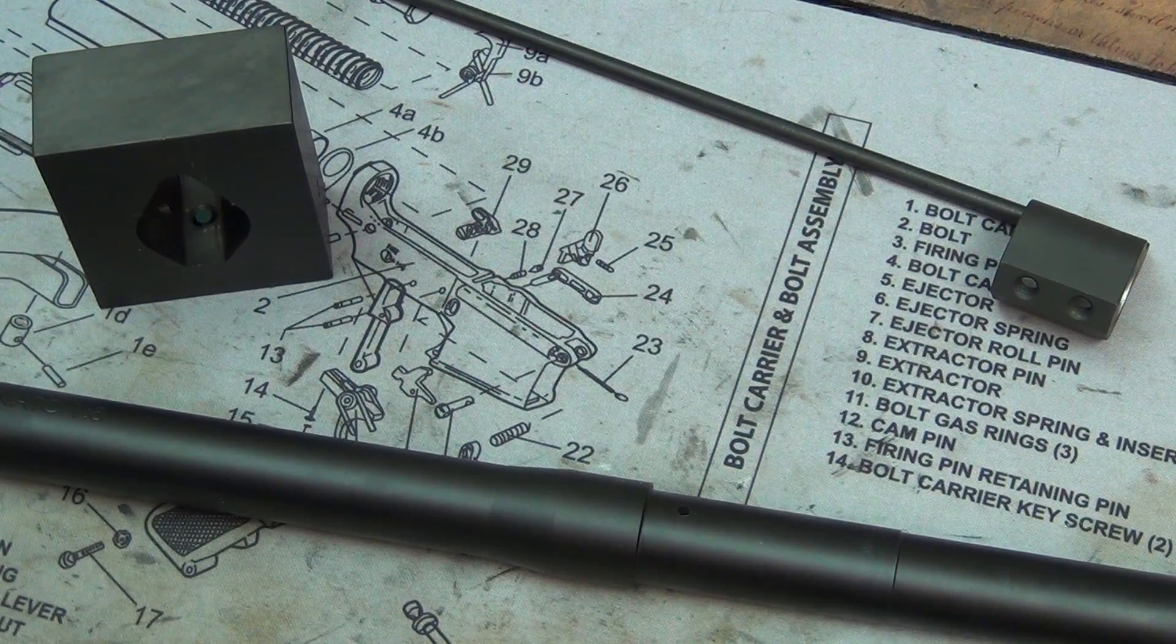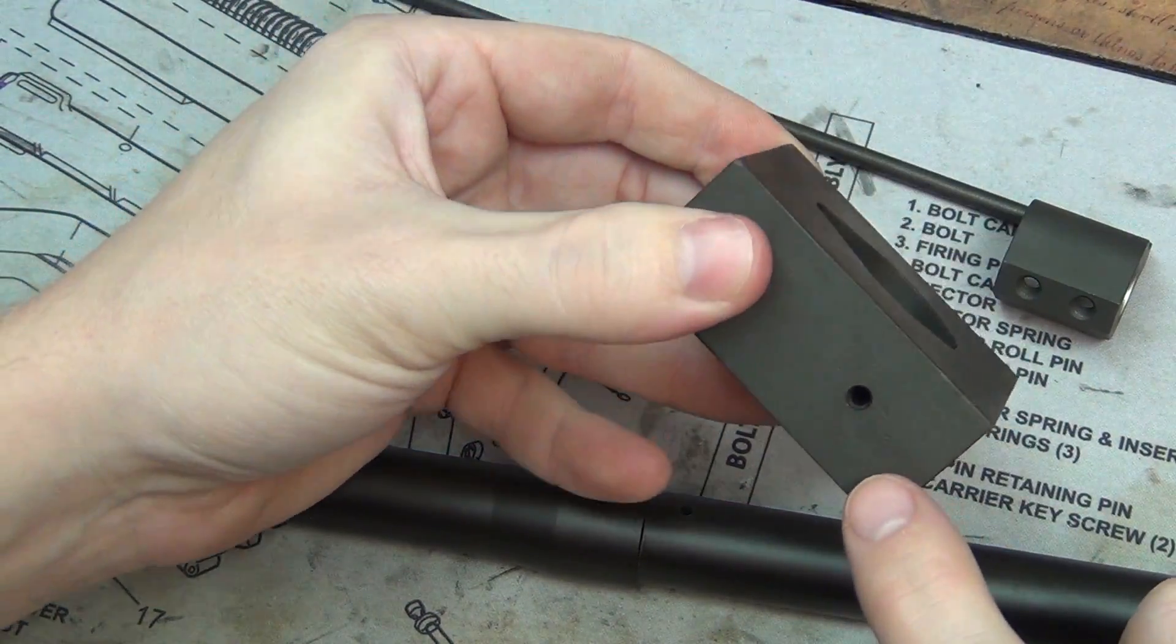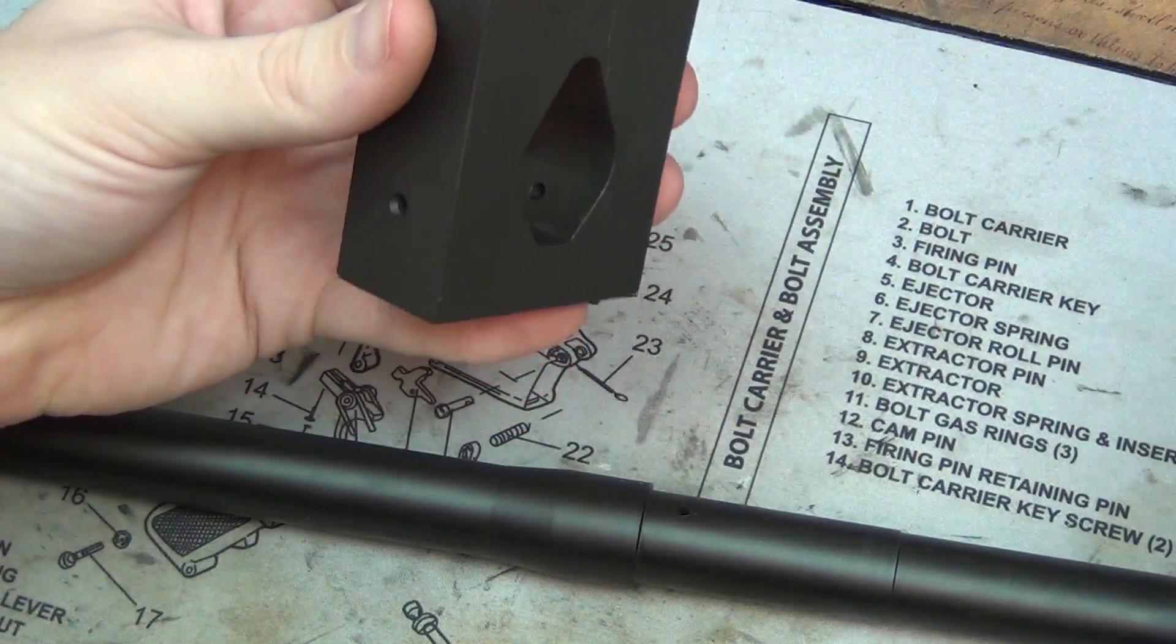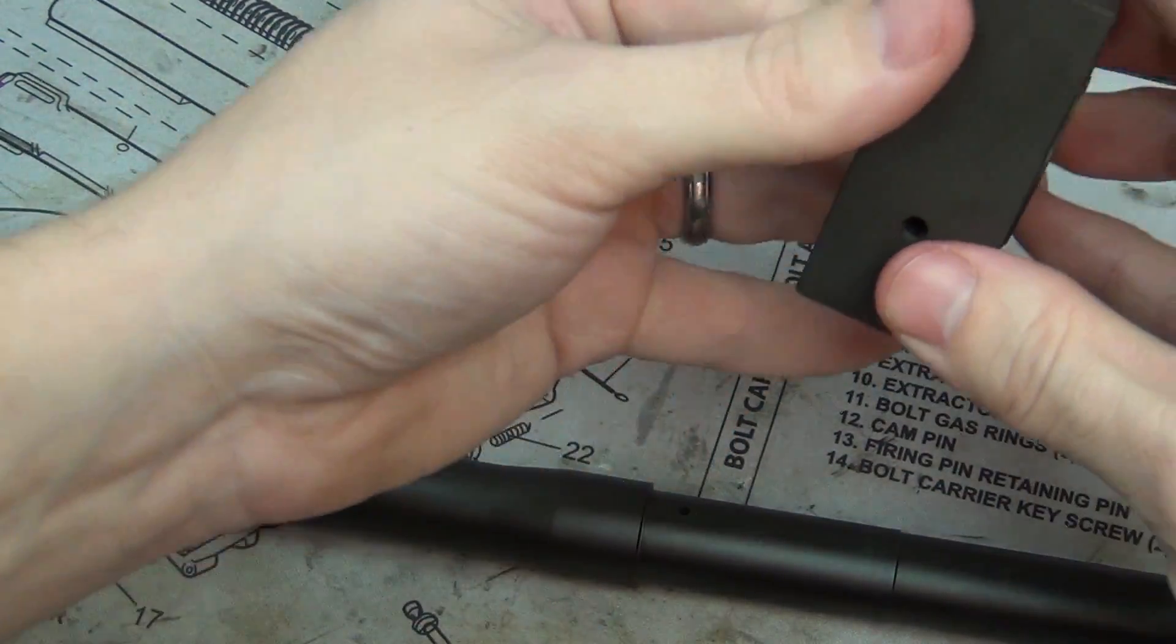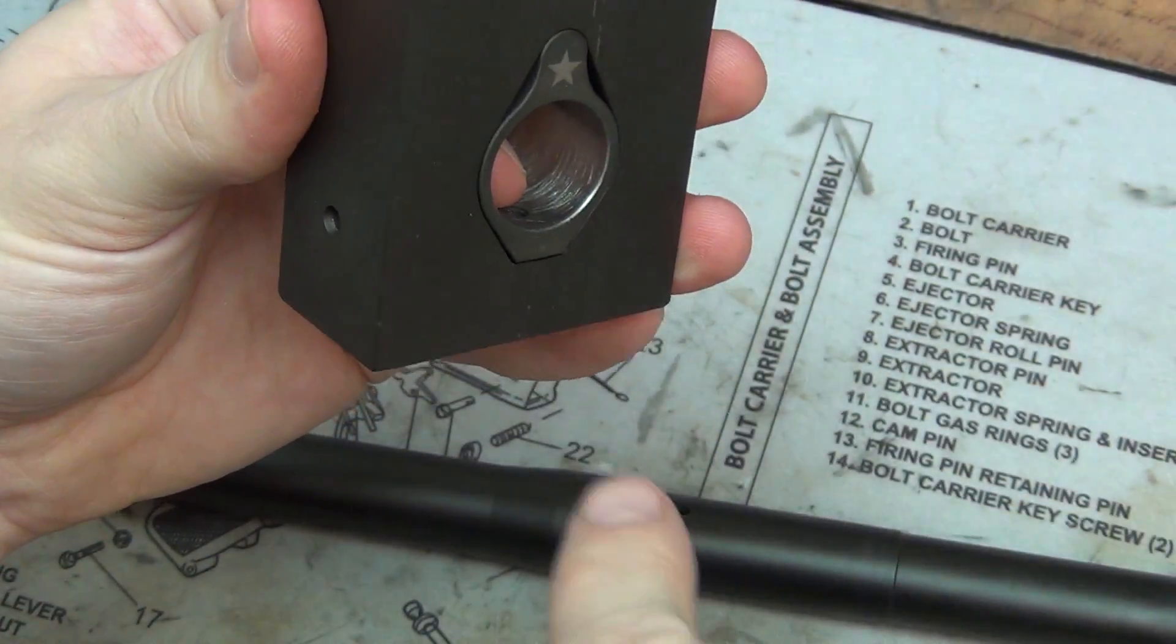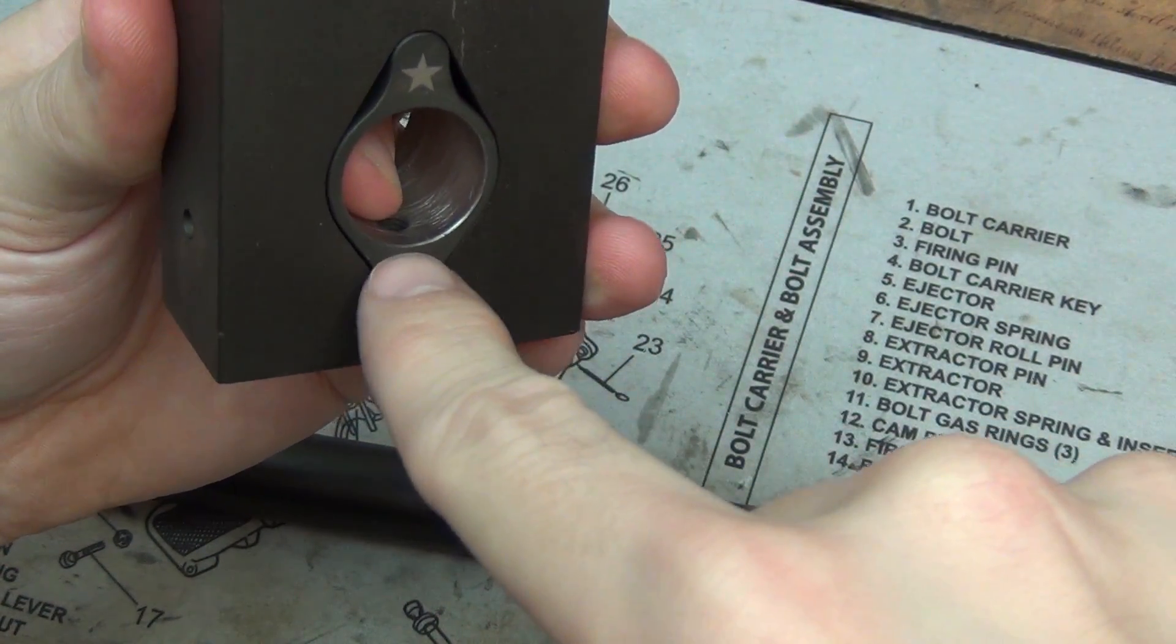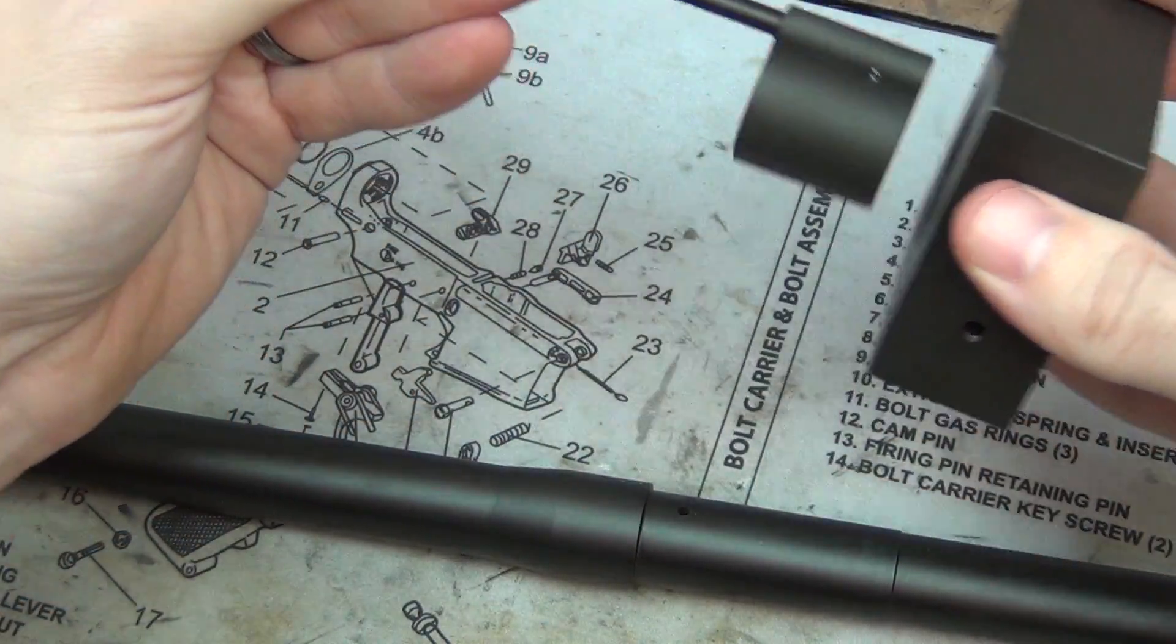I'm going to go ahead and do that, and then in a separate video I'm going to show how to pin the gas block on. What I mean by that is using this jig to go directly through the gas block, through the bottom very slight portion of the barrel, and then out the other side and pinning it in place.